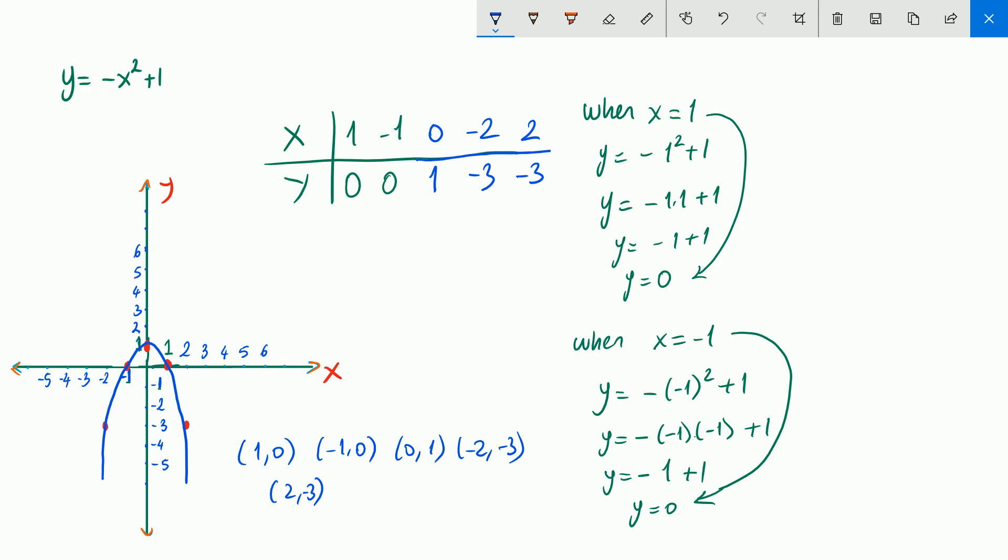Please notice, because x-square has negative sign, the way shows, the way of this line, or the opening part, shows downward. Please pay attention there. Thank you so much.